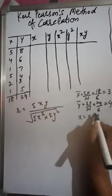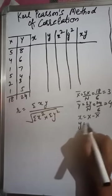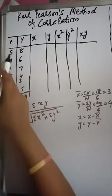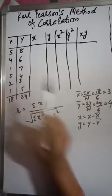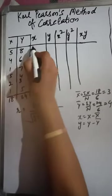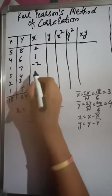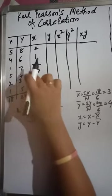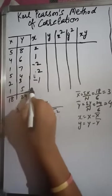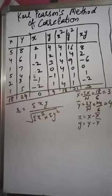We find x deviations as x minus x̄ (which is 3) for each observation: 5−3=2, 4−3=1, 1−3=−2, 5−3=2, 2−3=−1, 1−3=−2. Similarly, we compute y deviations as y minus ȳ for each observation.